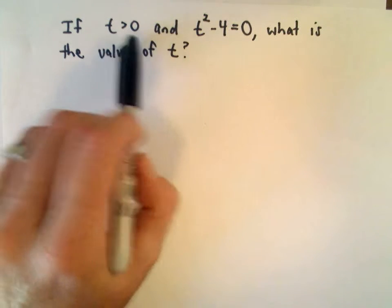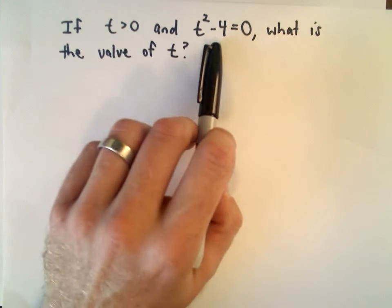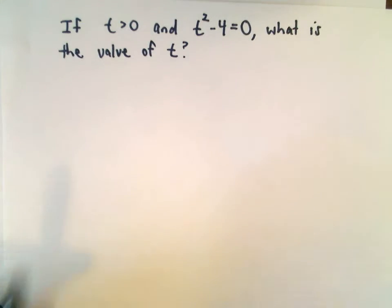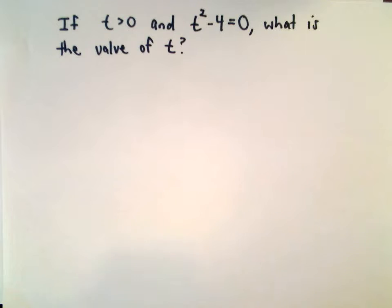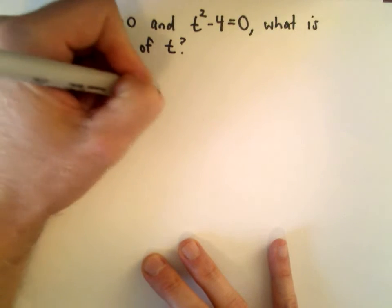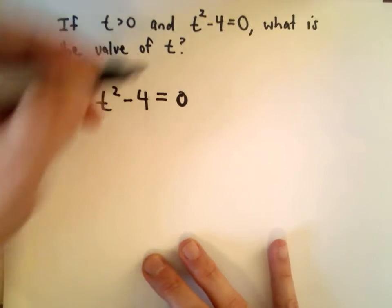We're given that if t is greater than 0 and t squared minus 4 equals 0, we want to know what's the value of t. Compared to the previous problem, this is hopefully not too terrible at all. Basically, we just need to solve for t.